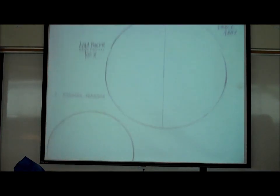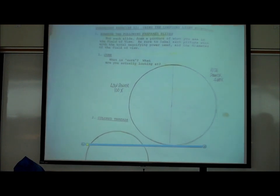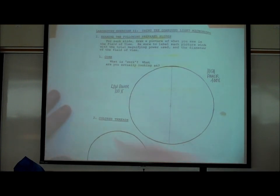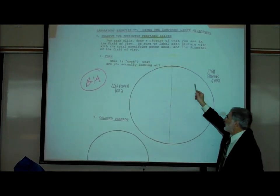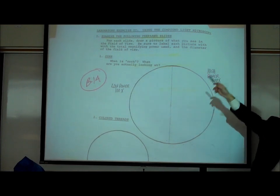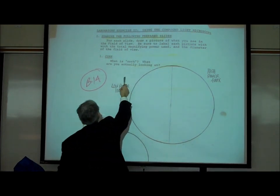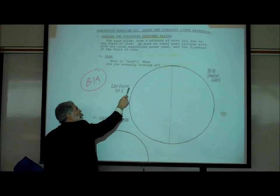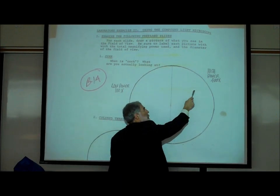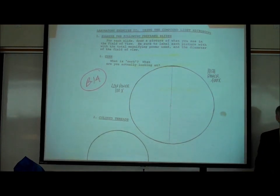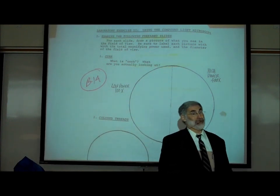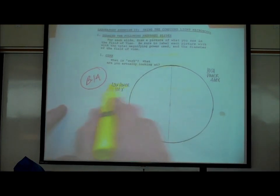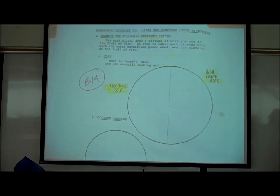What are we doing today? On page B14, you have cork in front of you. I've drawn a circle representing your field of view, and I've asked you to draw a few of the cork cells you see — a few under low power on the left half and a few under high power on the right half. You don't have to draw 100 cells — draw one, two, or three to get a sense of the difference between low power (100x) and high power (400x).